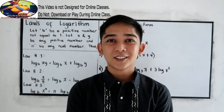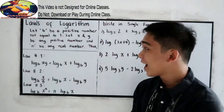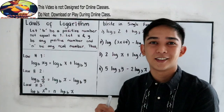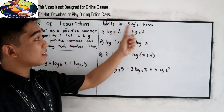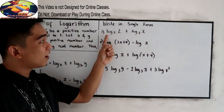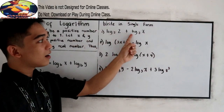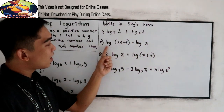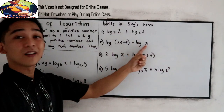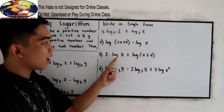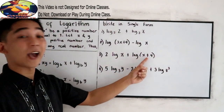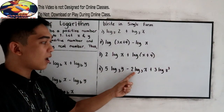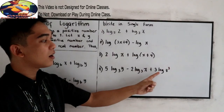Now, what if the direction asks you to write the expanded form into single form? That is the reverse process. Examples: Number 1: log 2 base z plus log x base z. Number 2: log(3x+4) minus log x. Number 3: log x plus log(x+4). Number 4: 5 log y base 3 minus 2 log x base 3 plus 3 log z base 3.